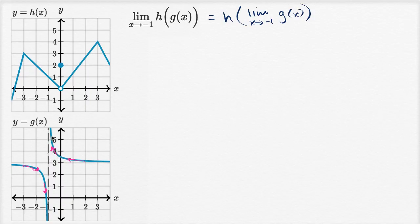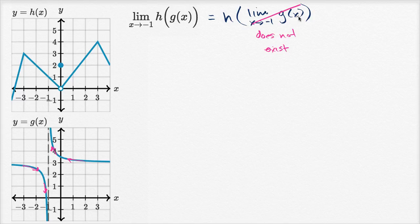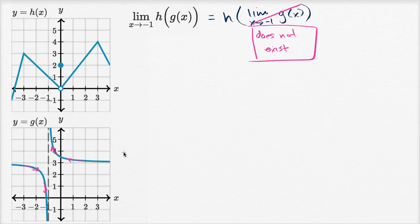One side is going towards positive infinity and the other towards negative infinity, so this limit right here is undefined — it does not exist. If the limit as x approaches negative one of g of x does not exist, there's no way we can evaluate h of does-not-exist. So this entire limit does not exist.